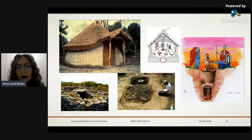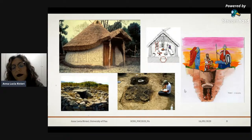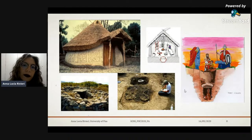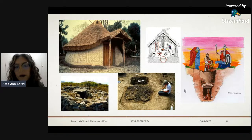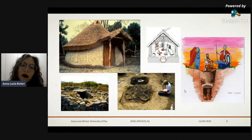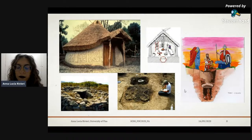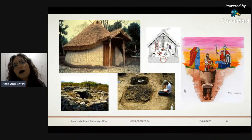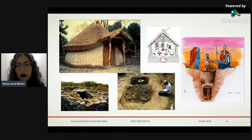The Villanovian culture was a population that shared many common features with other populations of prehistoric Europe and proto-italic societies. Their burial customs were mainly incineration, and that also shares common features with the so-called Urnfield culture of northern Europe.